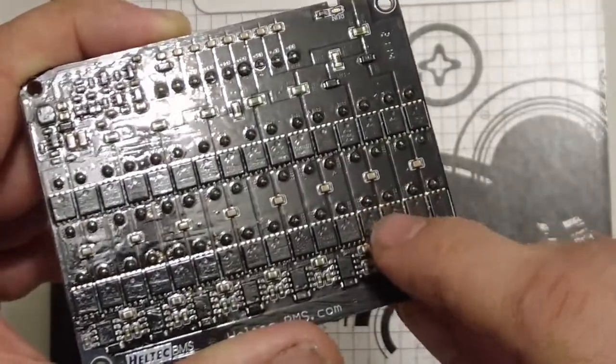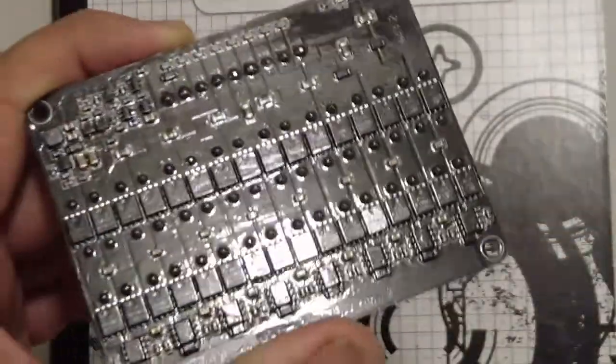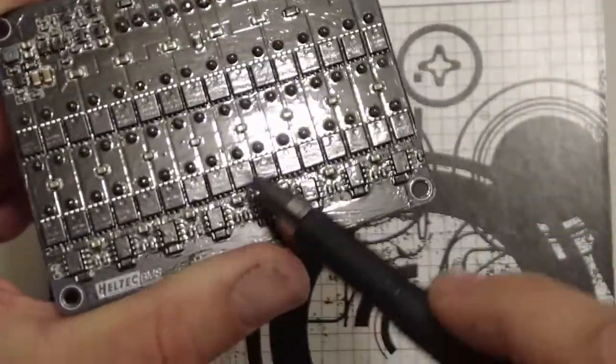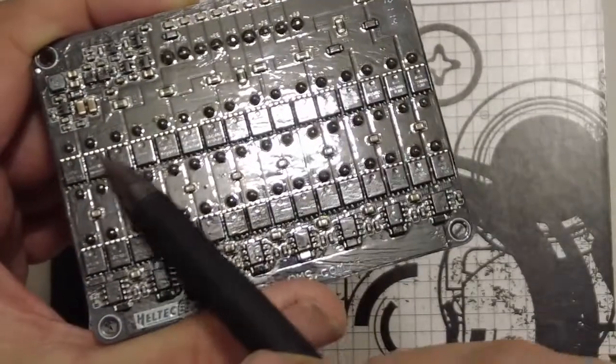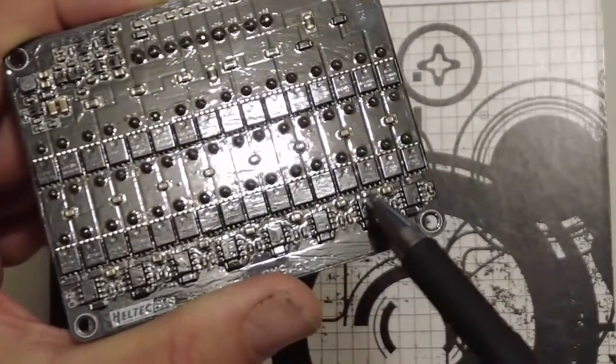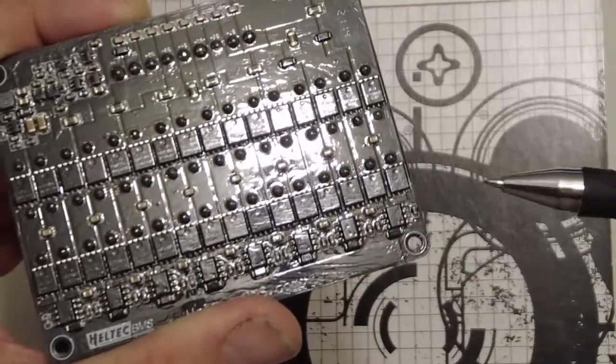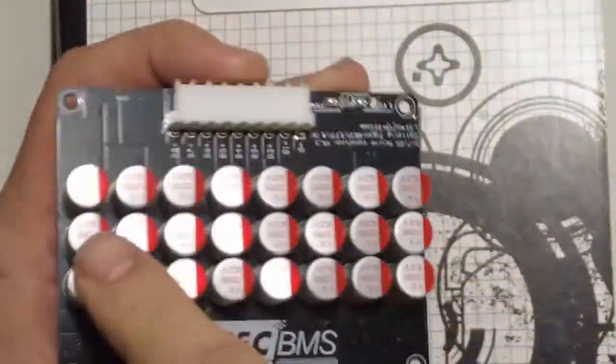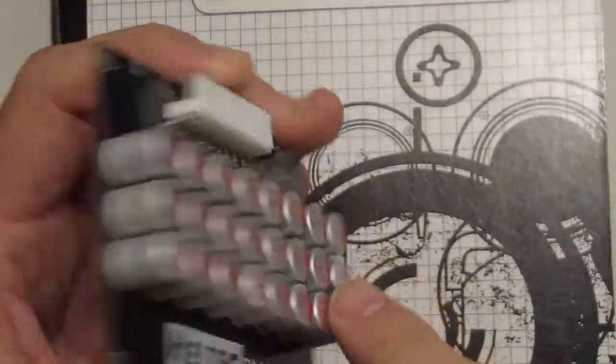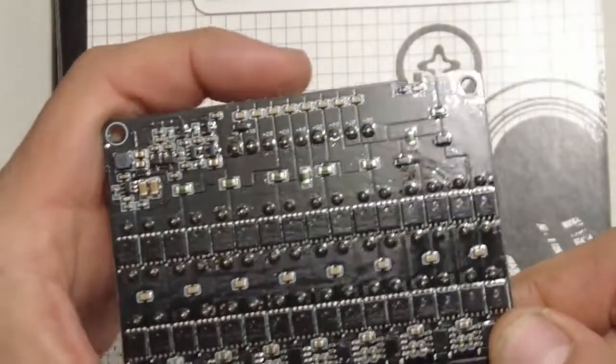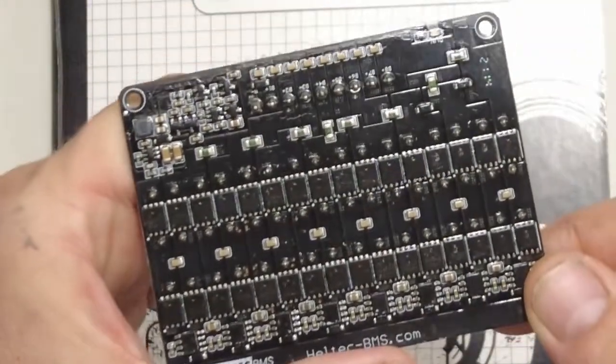So these are MOSFETs. These are all N-channel MOSFETs here and here. And then these are all the capacitors. And it's a relatively simple circuit.